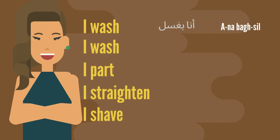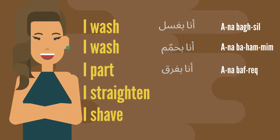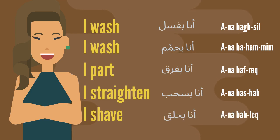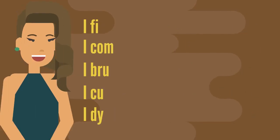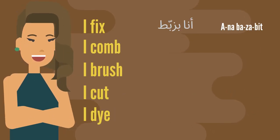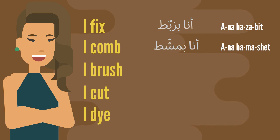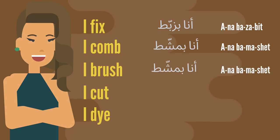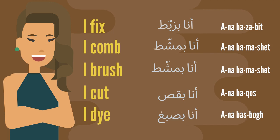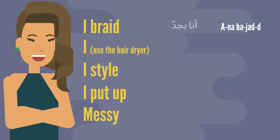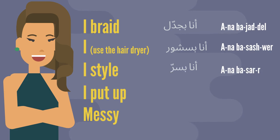Let's review: I wash — 'ana basil' or 'ana bahamman'. I part — 'ana bufarrit'. I straighten — 'ana bashubb'. I shave — 'ana bachlat'. I fix — 'ana bazabbut'. I comb — 'ana bambashit'. I brush — 'ana babrushit'. I cut — 'ana bass'. I dye — 'ana basbubb'. I braid — 'ana bajdel'. I use the hairdryer — 'ana bstawa'. I style — 'ana ba'mal'.